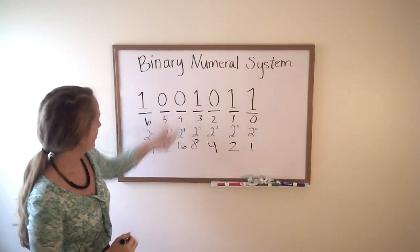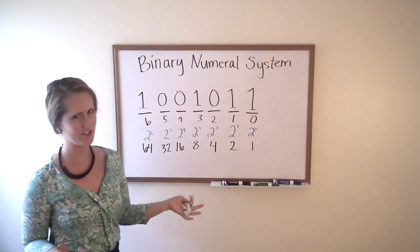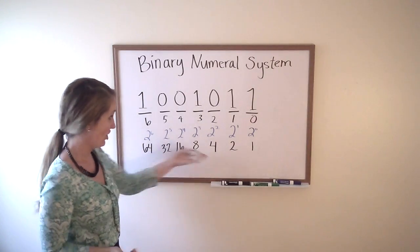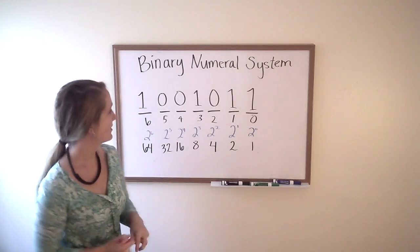Next, what we're going to do is see which ones of these numbers do we keep. Do we just add all of these together? And if these were all ones, then yes, we would. But some of them are zeros.